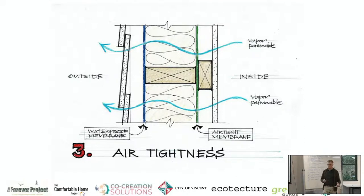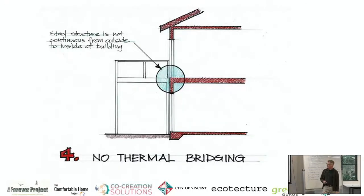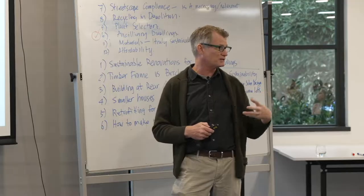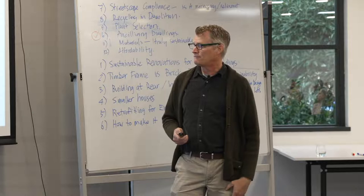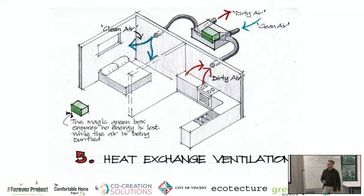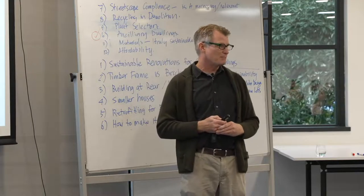Fourth, passive house prevents energy escaping through thermal bridges — for example, they won't allow steel beams to run from inside to outside because it's just a highway for energy. Fifth, because the house is well-sealed, it compensates by having a heat exchange system that gives you a very gentle, continuous supply of fresh, pure air into the house.